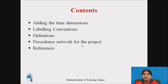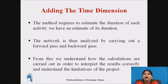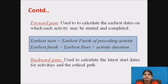These are the contents of this video lecture. We see adding the time dimensions: this method requires estimating the duration of each activity. The network is analyzed by carrying out a forward pass and a backward pass. From these we understand how the calculations are carried out, how to interpret the results correctly, and the limitations of the project. There are two methods: the forward pass method and the backward pass method.